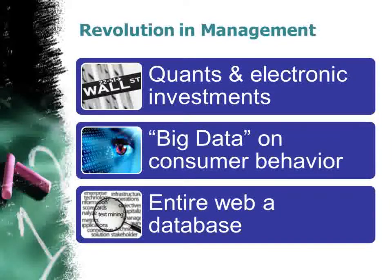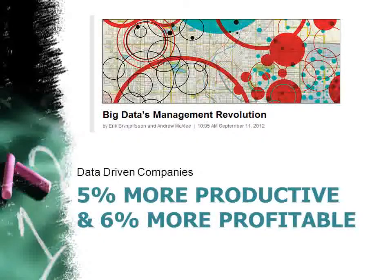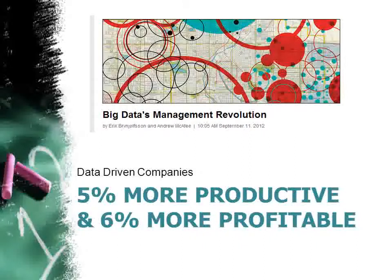The wide availability of massive amounts of data has made management with numbers easier and more common. Big data is changing which managers succeed. As the tools and philosophies of big data spread, they change long-lasting ideas about the value of experience and the practice of management. Companies that get insights through analysis of big data will do better, and therefore these managers will succeed more often. A recent study of 330 North American companies showed that the more companies characterized themselves as data-driven, the more they were likely to outperform their competitors on financial and operational results. Data-driven companies were 5% more productive and 6% more profitable than less data-driven companies.